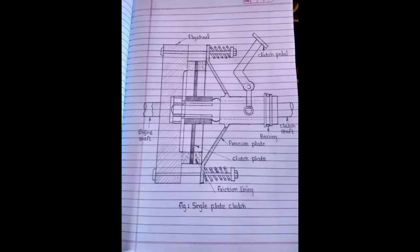Now we will talk about its construction. It mainly consists of a flywheel which is connected to the engine shaft, pressure plate, clutch plate, friction lining, clutch spring, pedal, clutch shaft, bearing, etc.